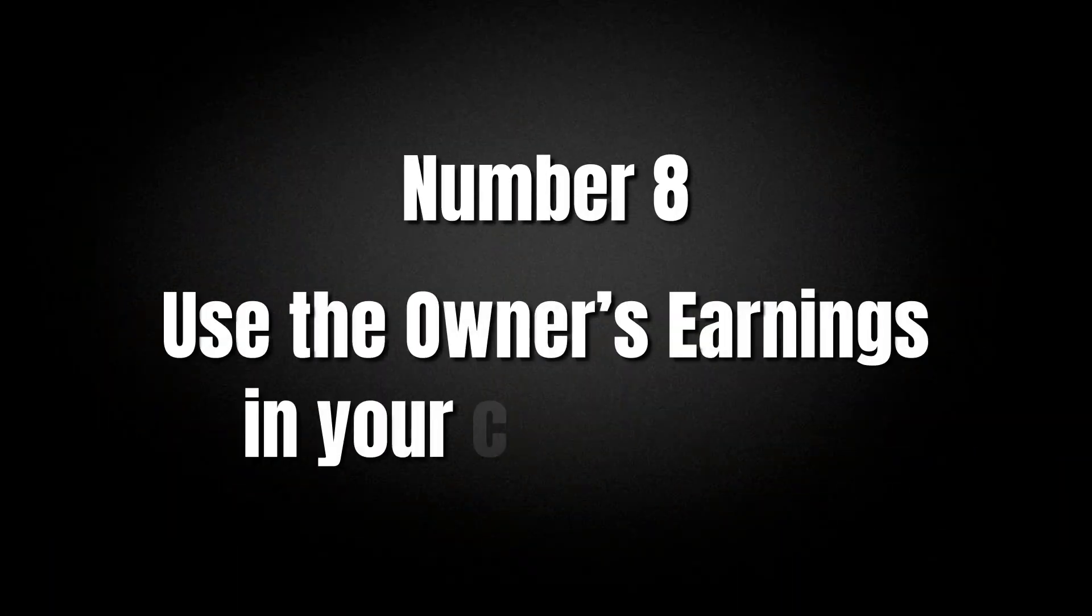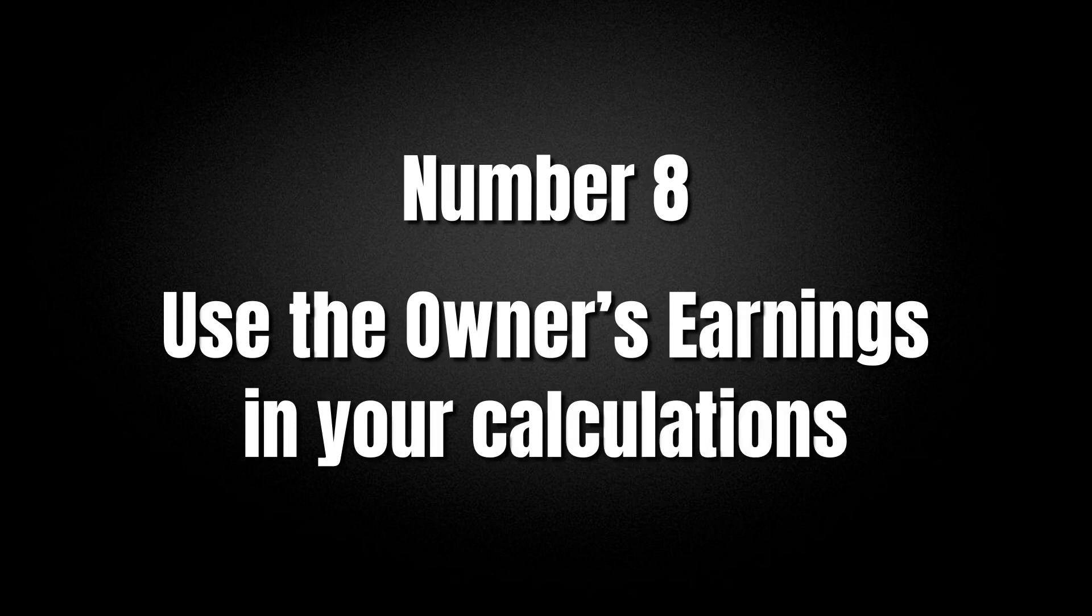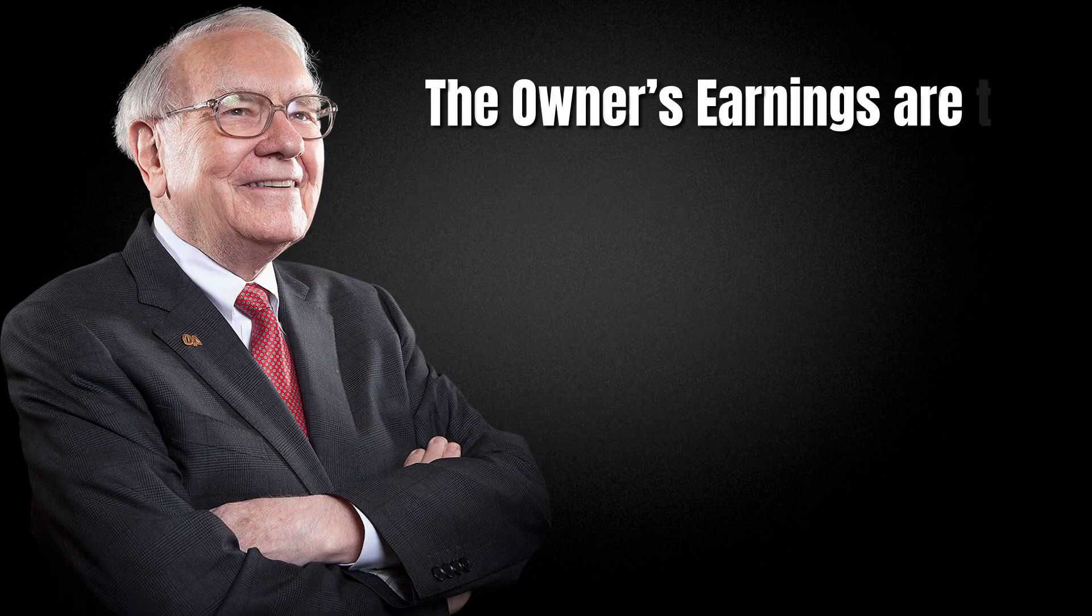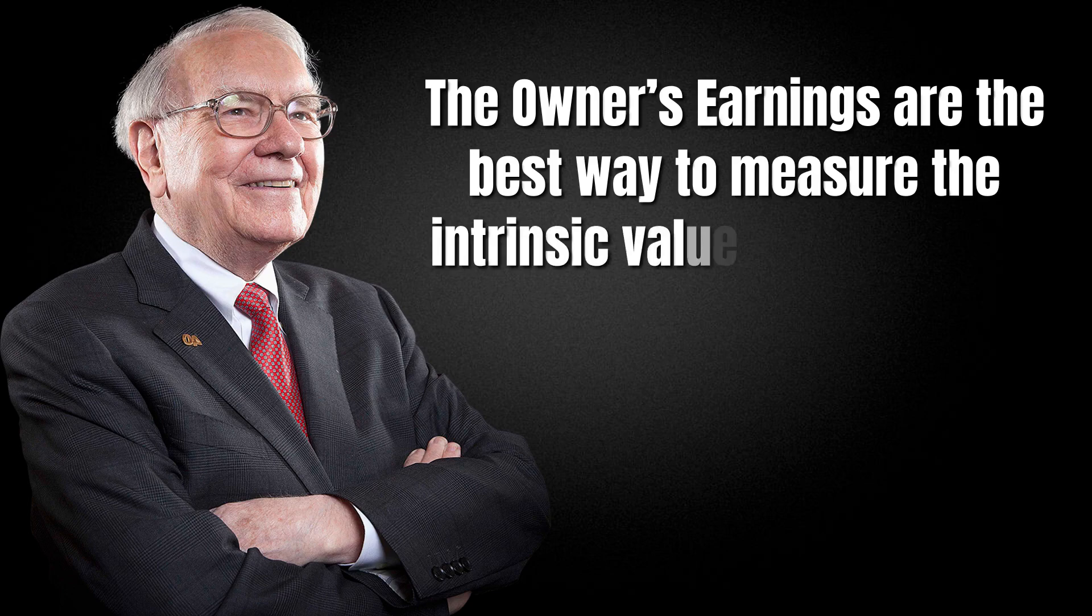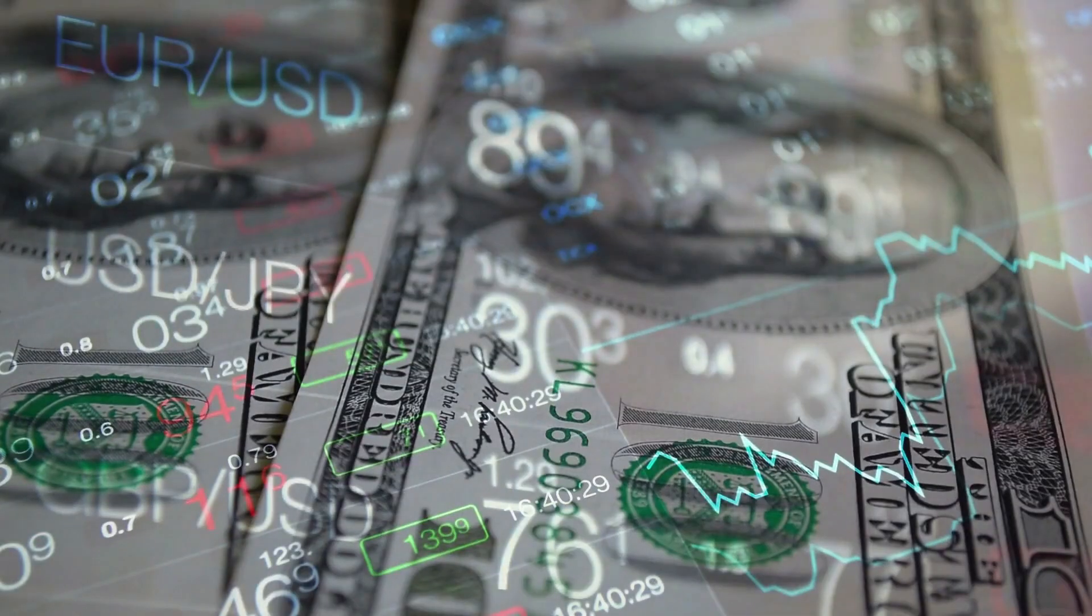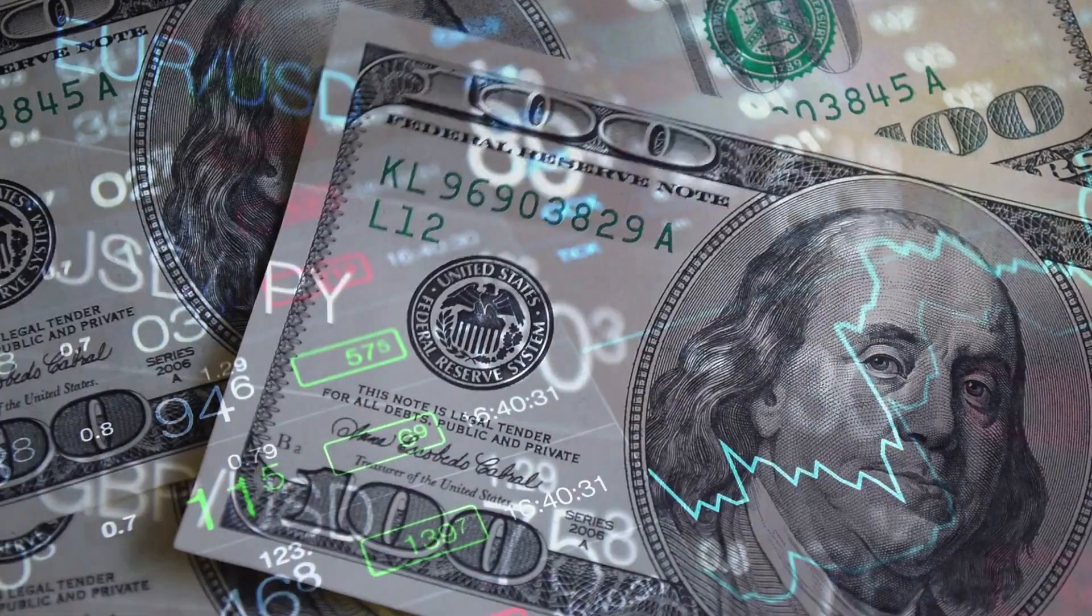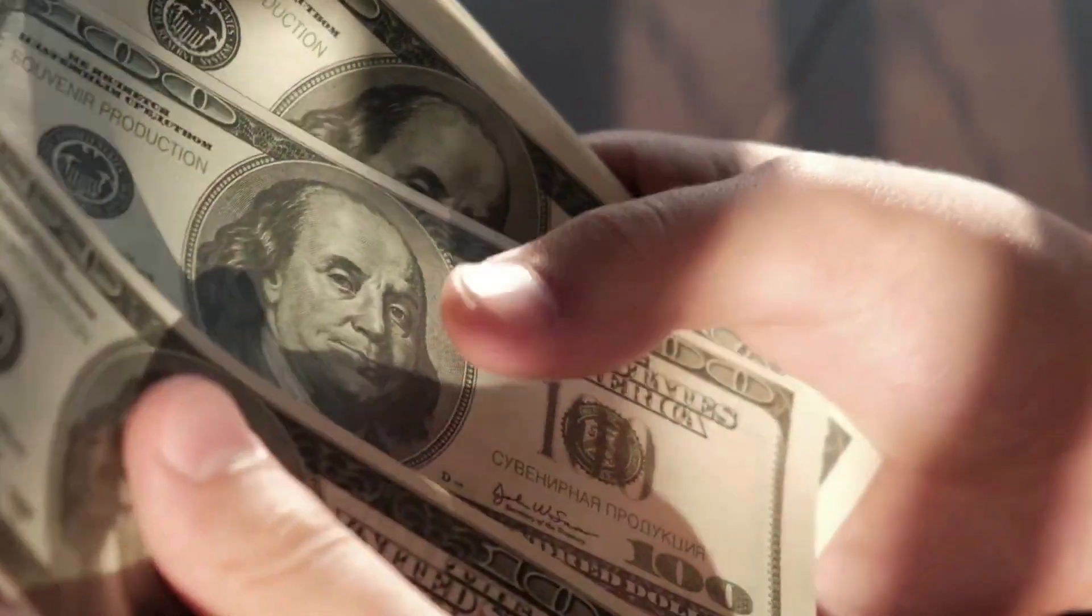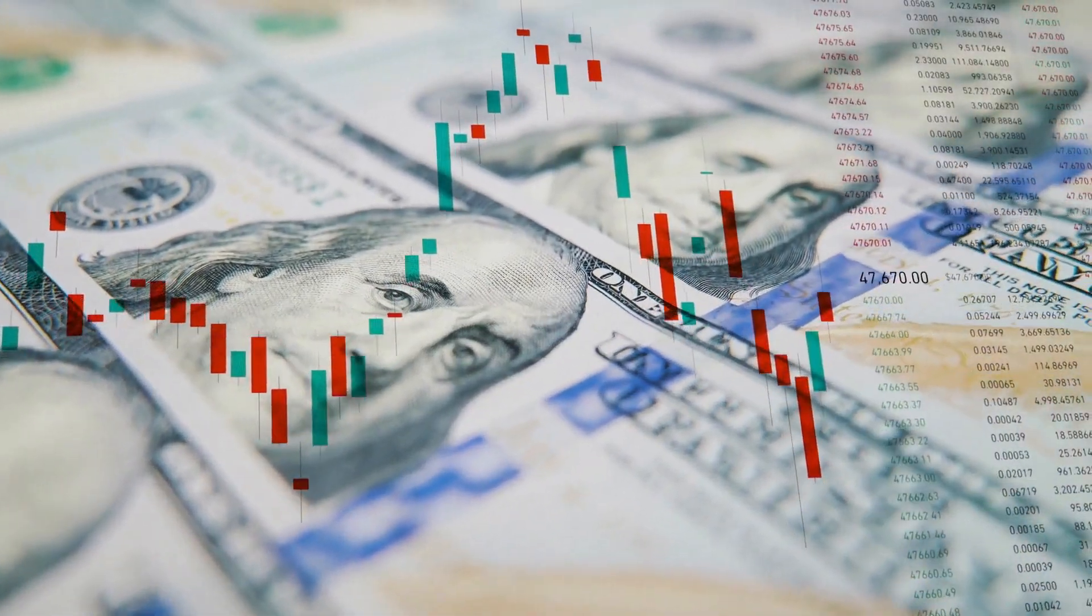Number 8. Use the owner's earnings in your calculations. According to Buffett, the owner's earnings are the best way to measure the intrinsic value of a business. I showed you how to do this calculation and we'd highly advise you to use it in your own evaluations as well. Number 9. The $1 promise. What is the market value assigned to each dollar of retained earnings? It's essentially a way to measure the retained earnings compared to how much you paid for each dollar.